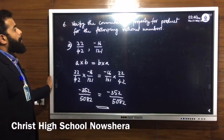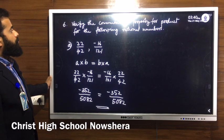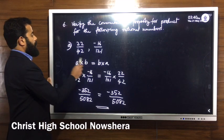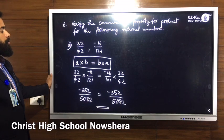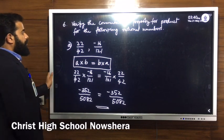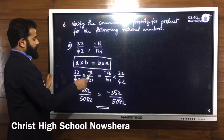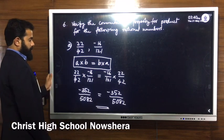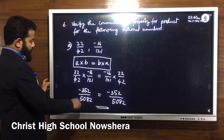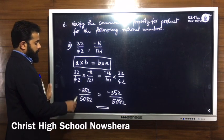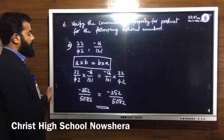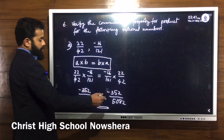Question number 6: verify the commutative property for multiplication. The general form is A into B equals B into A. The two rational numbers are 22 by 42 and minus 16 by 121. Substituting and calculating both sides gives a product of minus 352 divided by 5082 on both sides. LHS equals RHS.